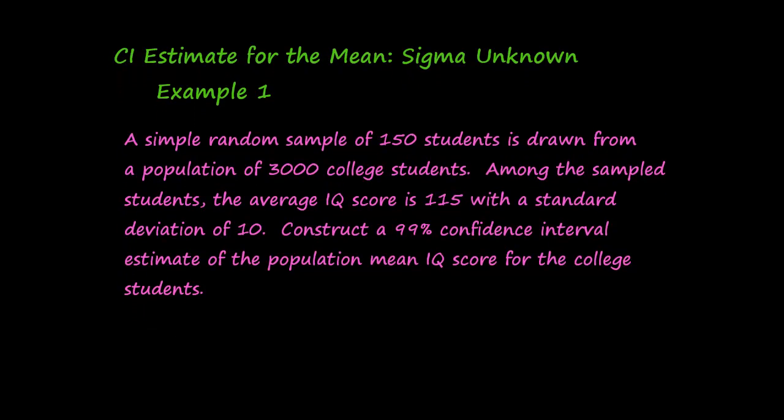Let's see what we are given here. We have a sample size of 150. They also give us the population size of 3,000, but that won't enter into our calculations. They give us the sample mean, 115, and the sample standard deviation of 10. Now the confidence level is 99%, so that leads us to an alpha of 0.01, and therefore an alpha over 2 of 0.01 over 2, or 0.005.